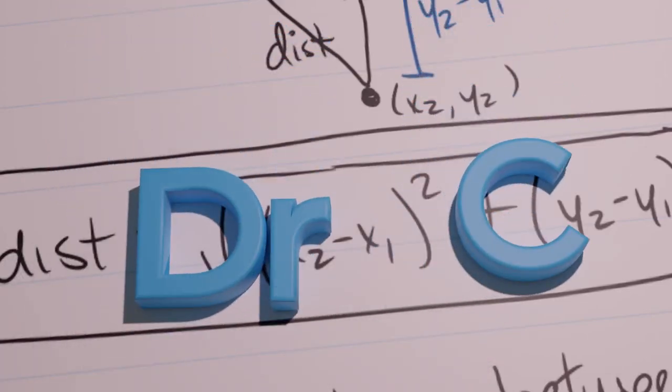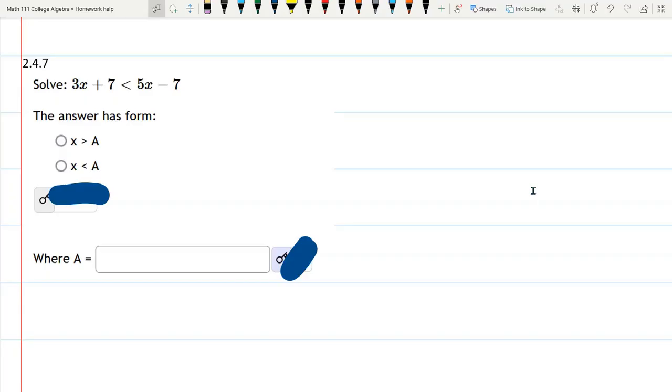This is a linear inequality that we're going to solve. If you have a linear inequality, you can solve it just using algebra. So let's start by rewriting it: 3x plus 7 less than 5x minus 7.